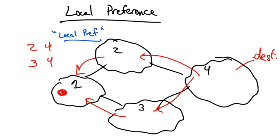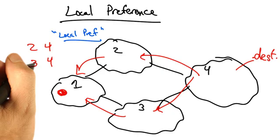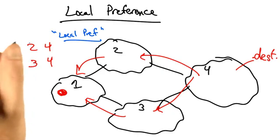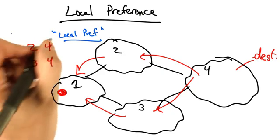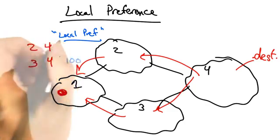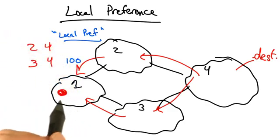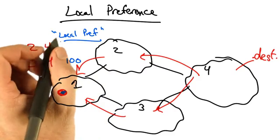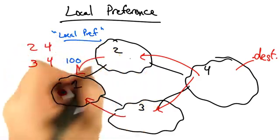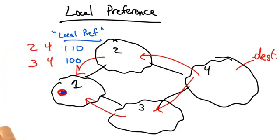Local preference, or simply local pref, allows an operator to configure the router to assign different preference values to each of the routes that it learns. The default local preference value is 100. If the operator prefers that this router select the path through AS2, it can configure the router to set a higher local preference for that route, such as 110.